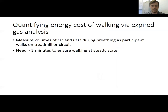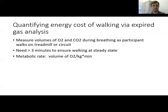How do we quantify the energy cost of walking via expired gas analysis? We measure volumes of oxygen and carbon dioxide during breathing as the participant or patient walks on a treadmill or a long circuit. It's necessary to perform these analyses on a treadmill or track because we need at least three minutes of continuous calculation to ensure the person is walking in steady state. Your breathing tends to increase linearly over the first three minutes of walking, so we need to start making measurements once that is stabilized. We then calculate the metabolic rate, which is simply the volume of oxygen normalized to body mass per minute.